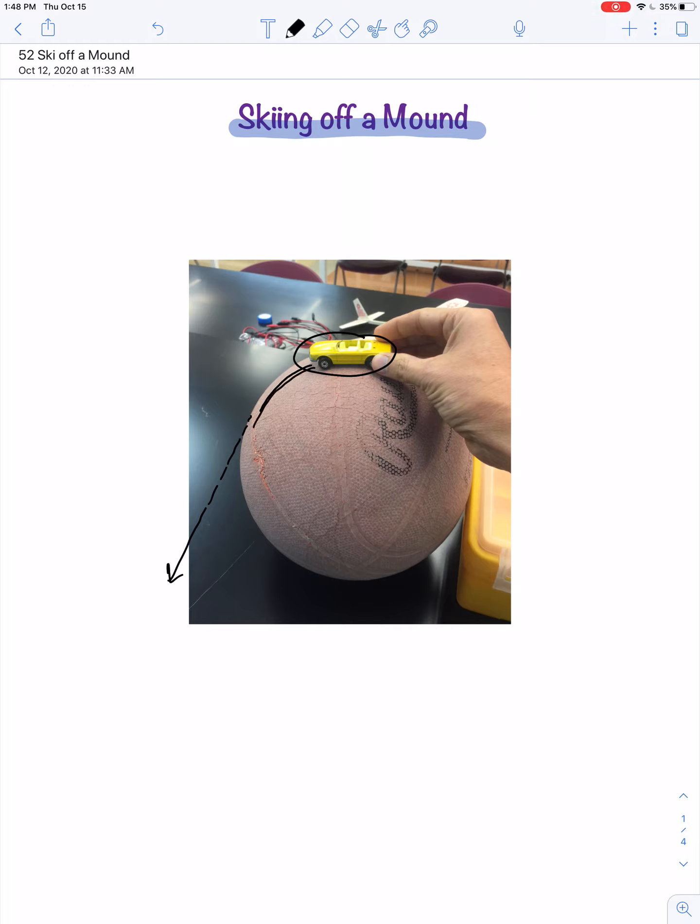It certainly can't make it 90 degrees around and then fall straight down because it's going to develop some tangential velocity along the way. There's some angle at which it loses contact. Kind of a ridiculous case, right? I don't think we're ever going to drive a miniature car off the top of a basketball.